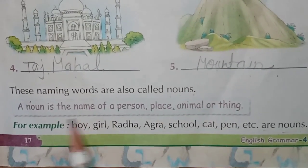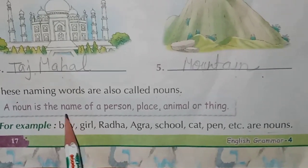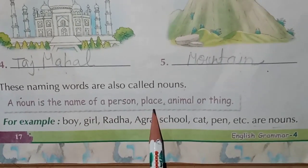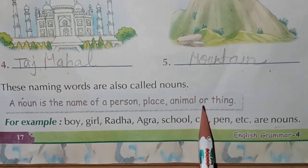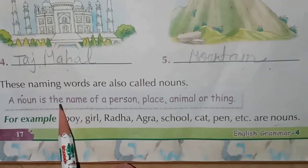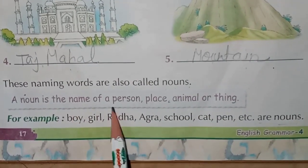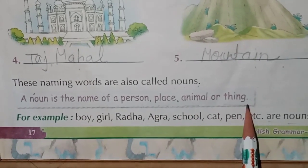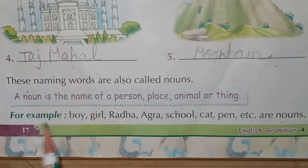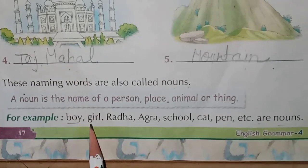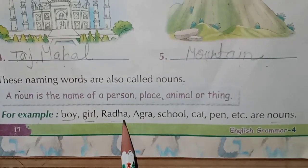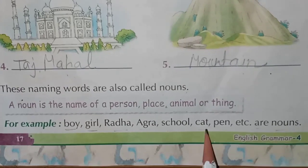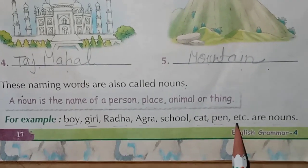So what is a noun? A noun is the name of a person, place, animal or thing. Noun kis ka name hai? Ek person ka name, place, animal or a thing. Clear? For example: boy, girl, Radha, Agra, school, cat, pen, etc.